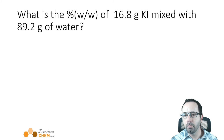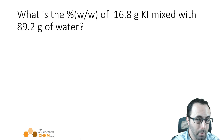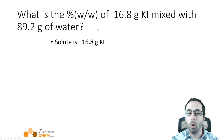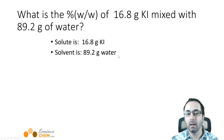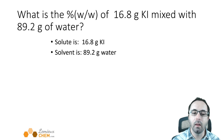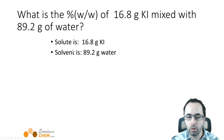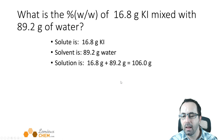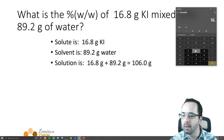What is the percent weight over weight of 16.8 grams of potassium iodide mixed with 89.2 grams of water? Here water is mentioned, and notice the mass of the entire solution is not given. Our solute is potassium iodide — 16.8 grams — and water is our solvent at 89.2 grams. The solution is solute plus solvent, so if we want the mass of the entire solution, we add them: 16.8 + 89.2 = 106.0 grams.